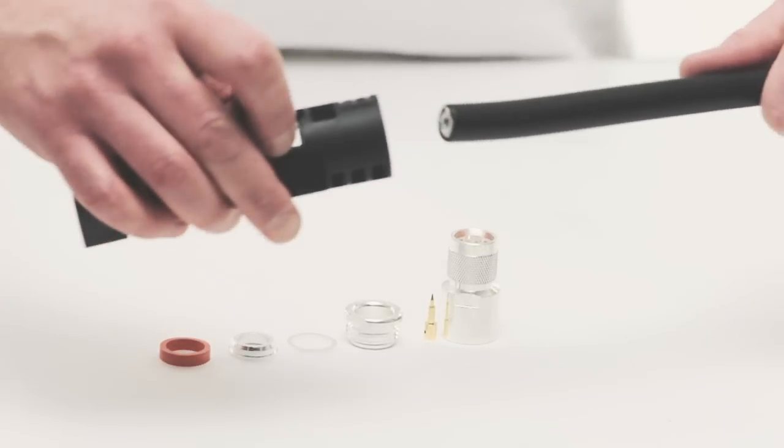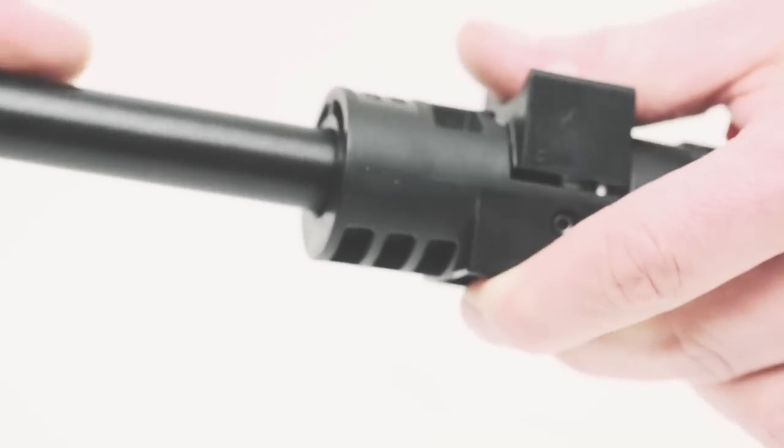To begin, insert the LMR 600 into the stripper. This will strip back everything but the center conductor.